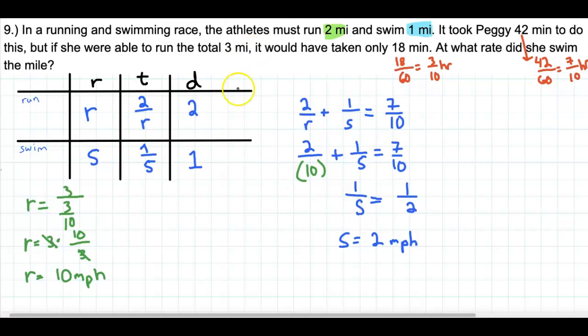All right, so the run rate, the run is 10 miles per hour, and the swim is 2 miles per hour. It's a pretty fast swim, too, really. All right, that's it. All right. Thank you.